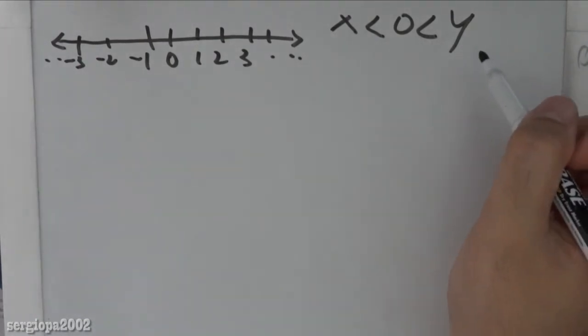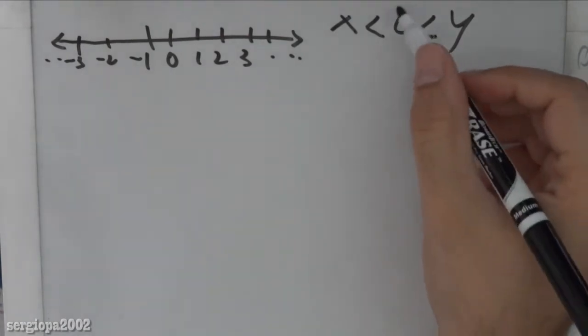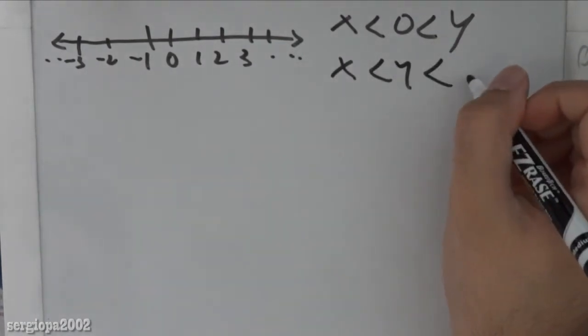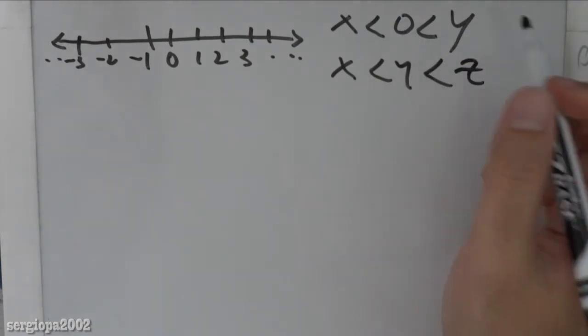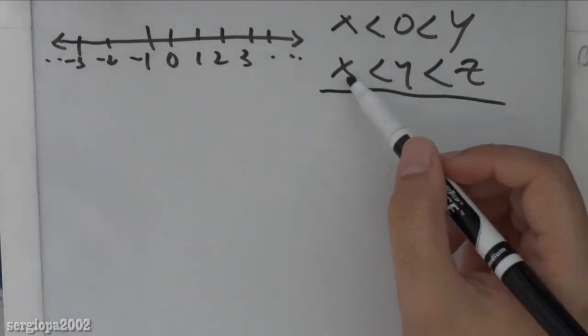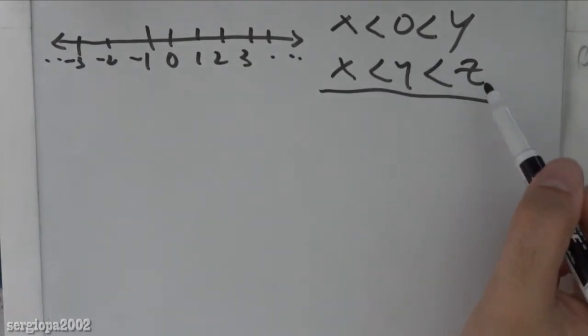The other thing is that also this 0 could be another number, so it could be x less than y less than z. It doesn't need to be 0. Writing it this way you can also see that x is less than y and y is less than z.